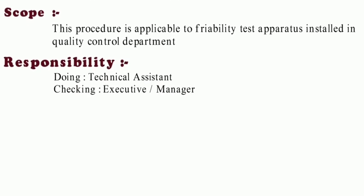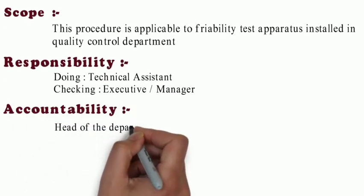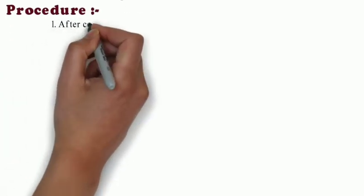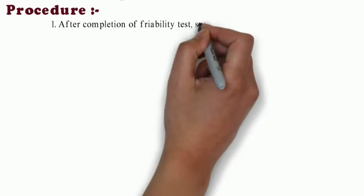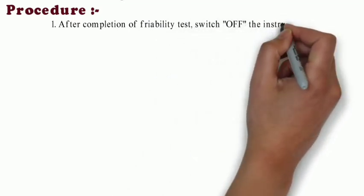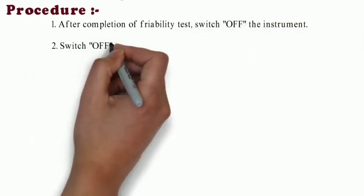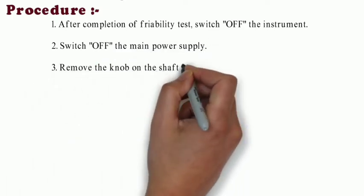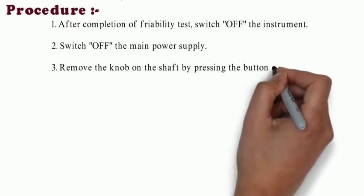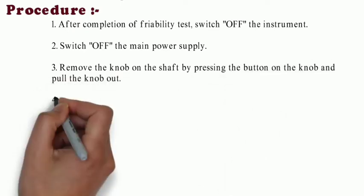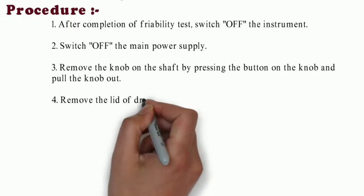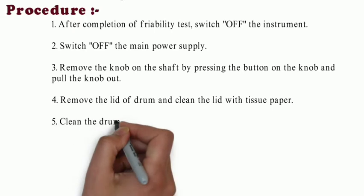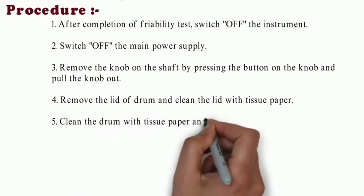Accountability is for head of department. Procedure: after completion of friability test, switch off the instrument first, then switch off the main power supply. Remove the knob on the shaft by pressing the button on the knob and pull the knob out. Remove the lid of drum and clean the lid with tissue paper.